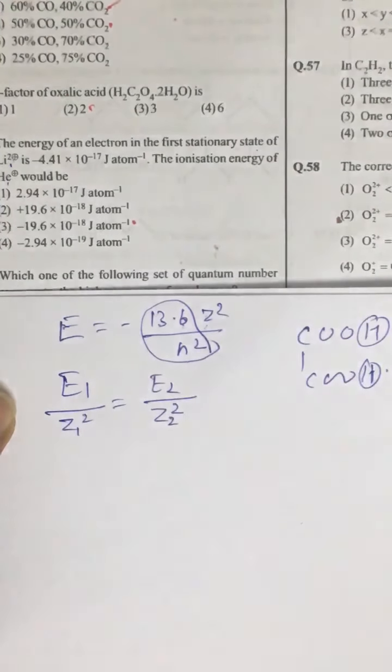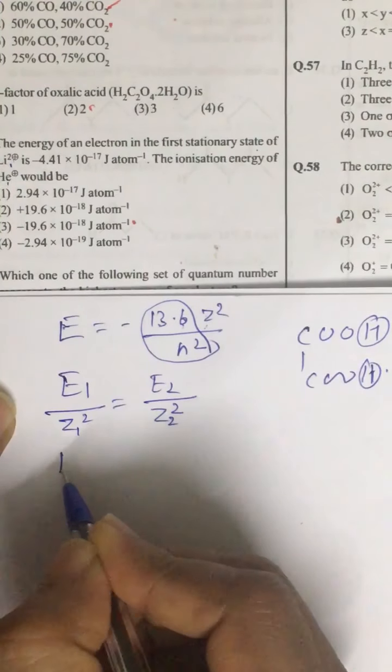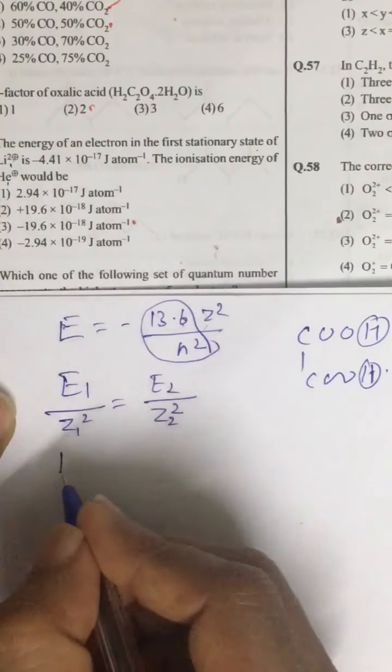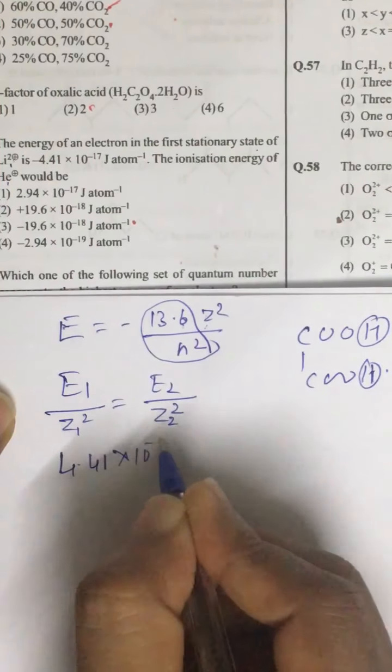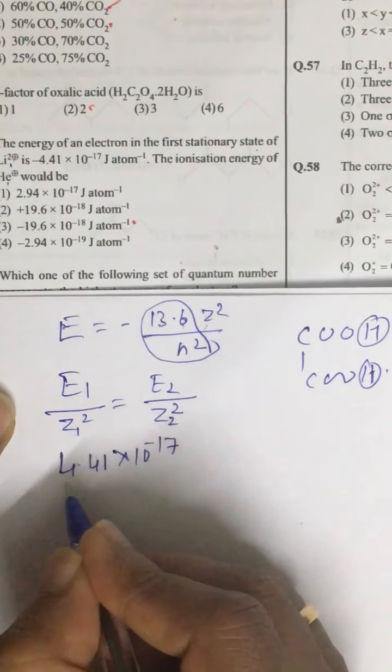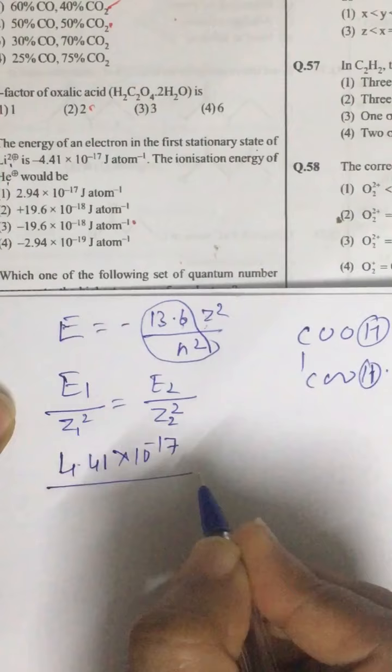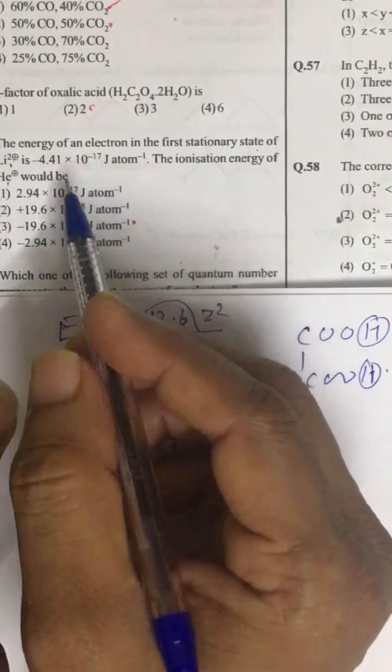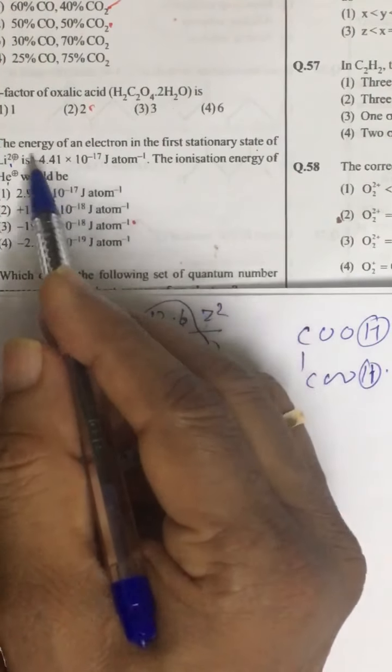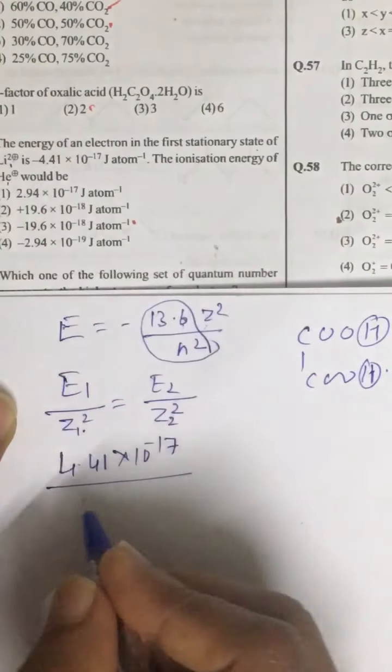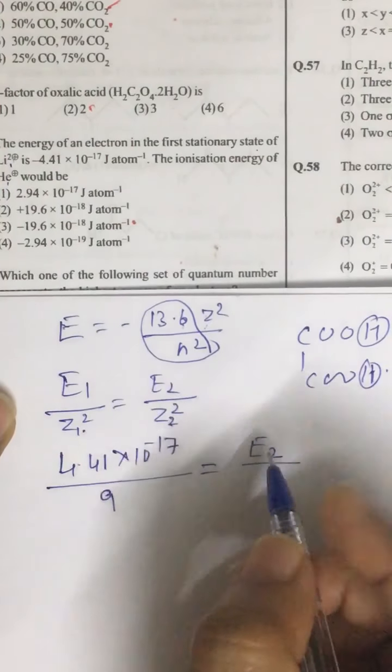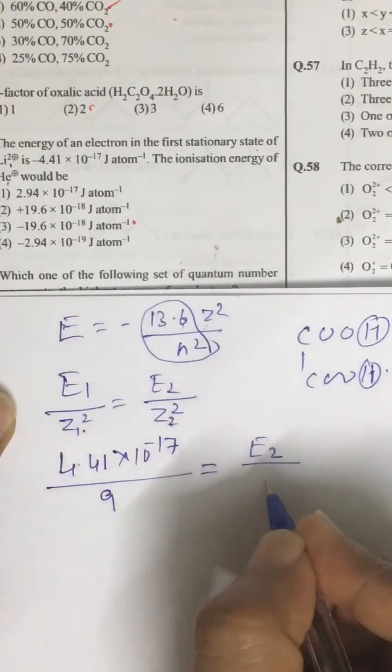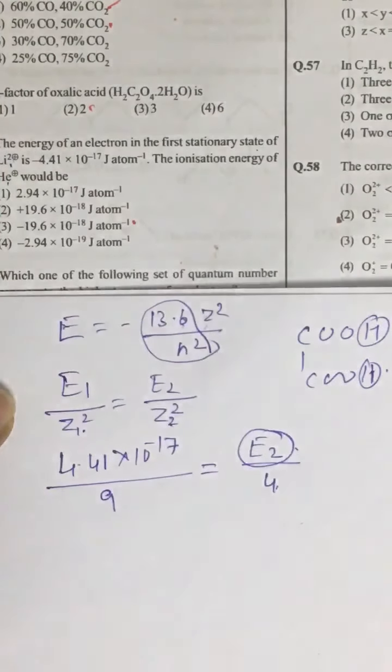Or you can say E1 upon E2. E1 value is given. It is 4.41 into 10 to the power minus 17. So we have a relation E1 upon Z1 square. Z you can say for lithium Z is 3. 3 the square is 9. E2 we have to find out. And Z2 square for He positive. It is 2 the square equal to 4. Just calculate E2. You will get a third option.